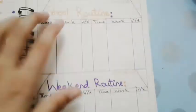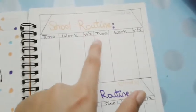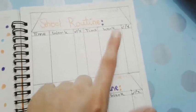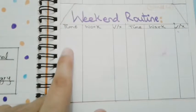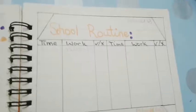Now on the next page I made this school routine and a weekend routine timetable. You can mention your time when you wake up, like if you want to wake up at six, so you can write six o'clock, and the same for the weekend you can do it by yourself.